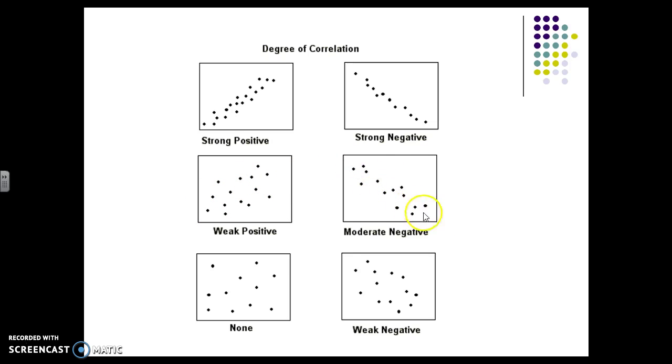A moderate negative, so the dots are closer together on the line that we would draw, but it's not as tight as the strong up here. No correlation means there's no line that we can really draw, in which case we draw a horizontal line.